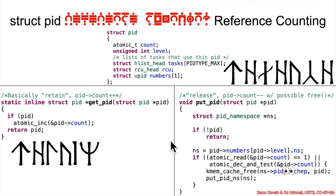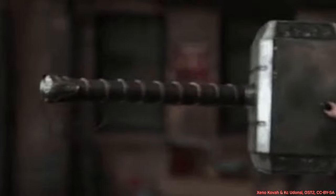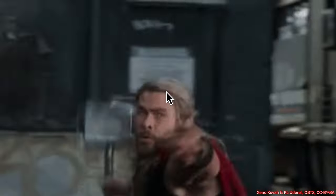You always have to watch out for a free that's embedded in a release, because that can lead to a racy free. Put another way, it is dangerous on release. You've got retain, release, retain, release — and the release is the dangerous part. That's what you need to watch out for.